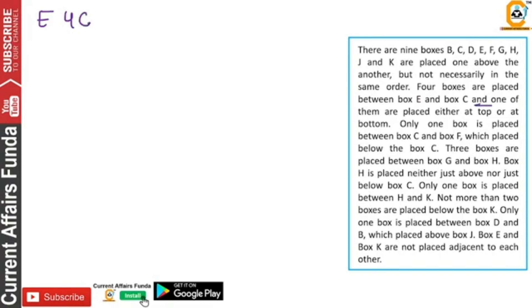4 boxes are placed between E and C. Now 4 boxes — E and C — I have written this below. And one is at the bottom and one at the top.